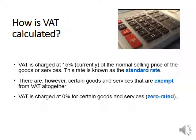VAT will also be charged at 0% for certain goods and services, and those are called zero-rated. So we have the 15% standard rate, we have goods and services that are exempt, and then we have zero-rated. The zero rate is usually applied to very basic food items to prevent hardship to poor people, so these items are rated at zero.